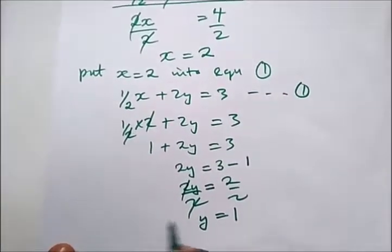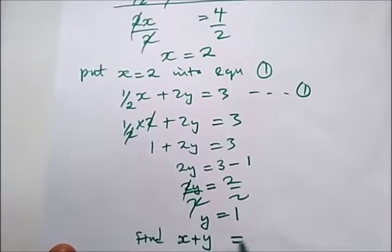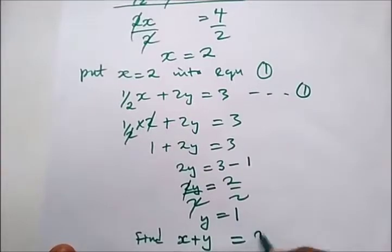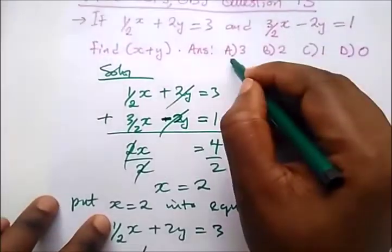The question says find x plus y. So what is x? x is 2 plus 1 which gives us 3. And our correct option here is option A.